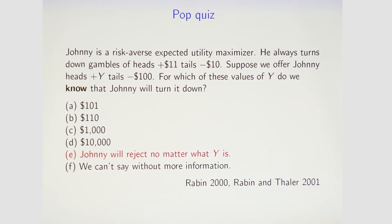It turns out the answer is E: Johnny will reject for all values of y up to and including the GDP of the earth. The reason is that this local curvature in the utility function lets you make an algebraic argument that bounds the global curvature of the utility function. Just this degree of local curvature — sufficient to make him always turn down heads +11, tails -10 — suffices to ensure that there is literally no value of y such that Johnny will take the 50-50 gamble heads +y, tails -100.